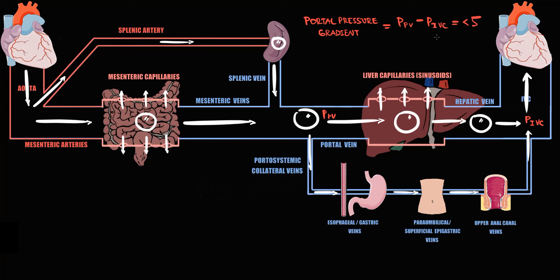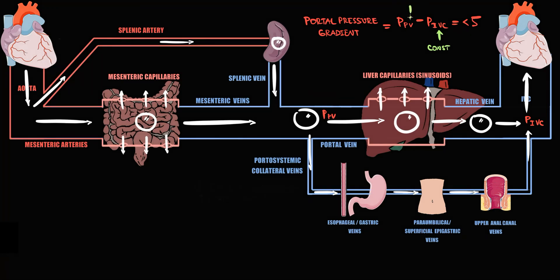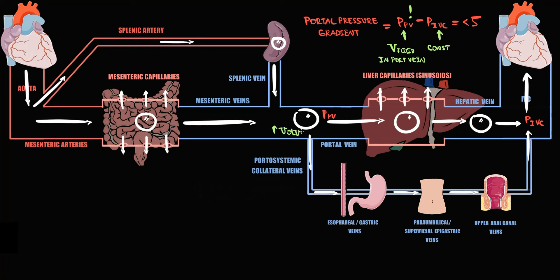In the portal pressure gradient, we assume that pressure within the inferior vena cava is constant, so the only factor that matters is the pressure within the portal vein. The hydrostatic pressure within the portal vein is determined by the volume of fluid inside it. Because pressure and volume are directly related, increasing volume of fluid inside the portal vein causes increasing hydrostatic pressure — and an increase in hydrostatic pressure within the portal vein is what we call portal hypertension.